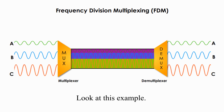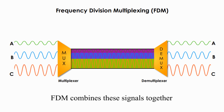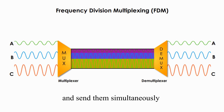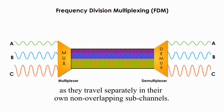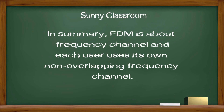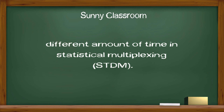Look at this example. Three different users are sending their data over the same channel. FDM combines these signals together and sends them simultaneously, as they travel separately in their own non-overlapping subchannels. In summary, FDM is about frequency channels, and each user uses its own non-overlapping frequency channel. TDM is about time allocation — every user is given the same amount of time in TDM, or a different amount of time in statistical multiplexing.